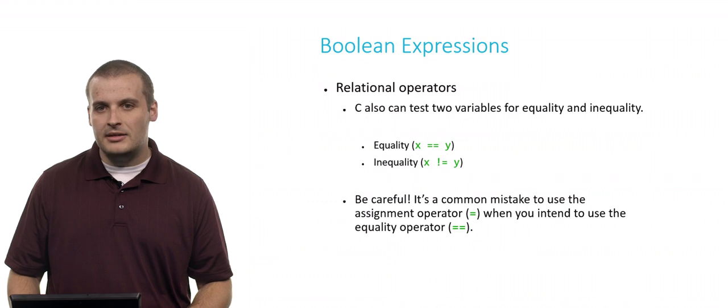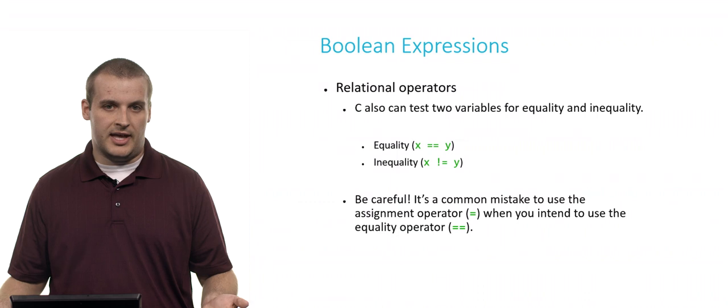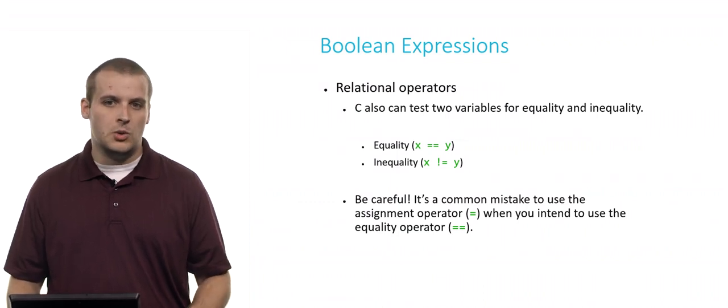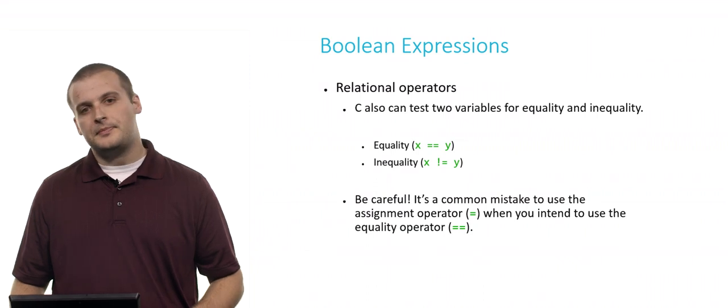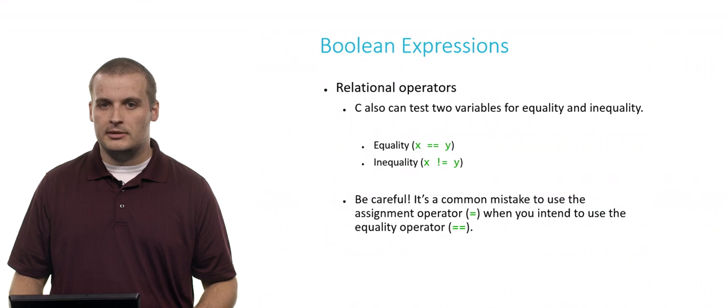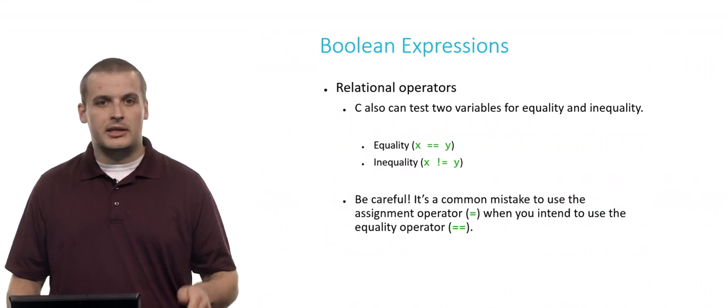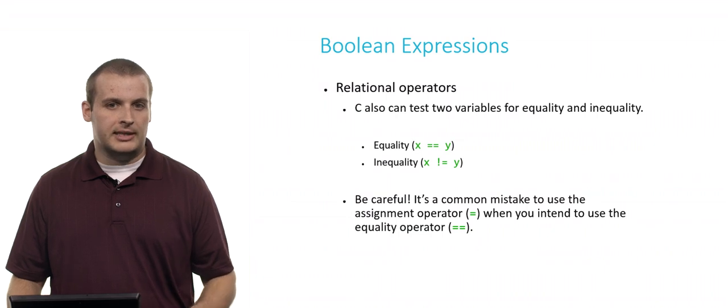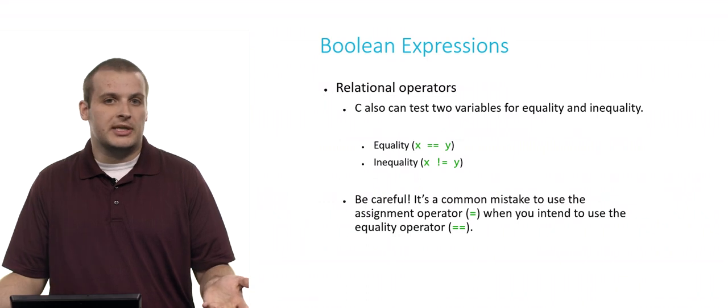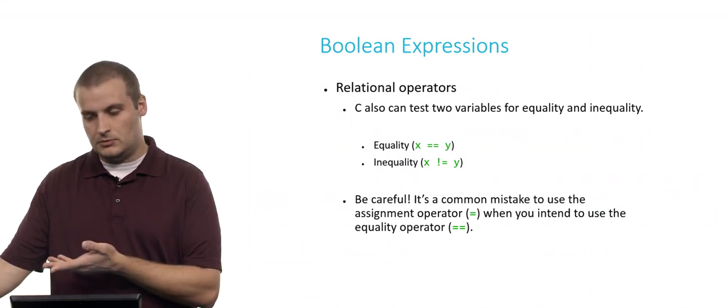The final two relational operators that are important are testing for equality and inequality. So if x equals equals y is true, if x and y's value is the same. If x is 10 and y is 10, then x equals equals y is true. If x is 10 and y is 11, x equals equals y is not true. We can also test for inequality using exclamation point or bang or not again. If x is not equal to y, then if that's the test we're using here, we'll be good to go. So if x is not equal to y, we'll go down that path.